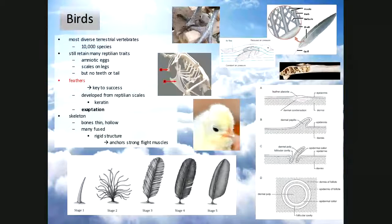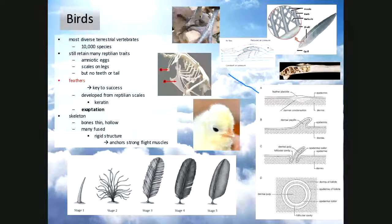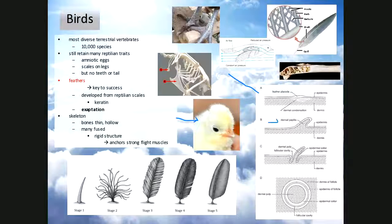Looking at a placoid from the side — a dermal condensation — feather placoids, scale placoids, and hair placoids all arise from this same structure. Notice how a young chick's down looks almost like fur — those are the early feathers from feather placoids. This connects birds and mammals both to reptilian scales through these dermal condensations that pinch up from the skin.